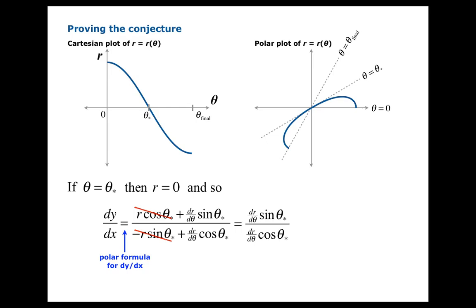What's important to note is the dr/dθ terms cancel. What are we left with? We are left with tangent of theta star. So it is true that when you have a zero at theta star for your polar function, you get an origin crossing, and the angle of inclination of that origin crossing is theta star.